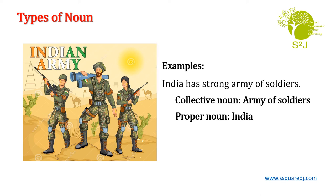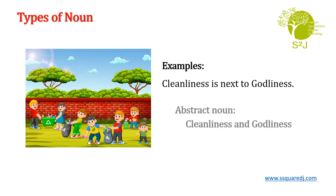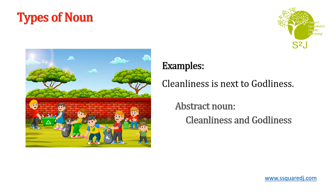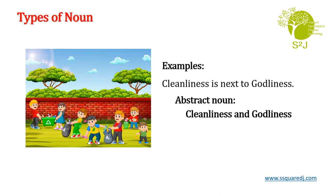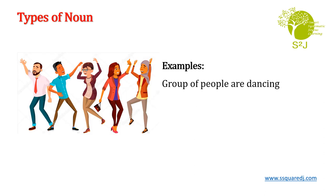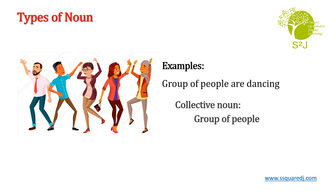Now let us go on to the next example. Cleanliness is next to godliness. Here, there are two abstract nouns: cleanliness and godliness — both are abstract nouns. Next example: group of people are dancing. Here, group of people is a collective noun, as we are talking about more than one person.